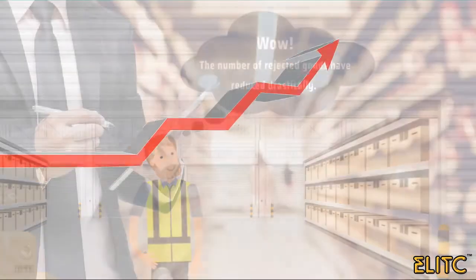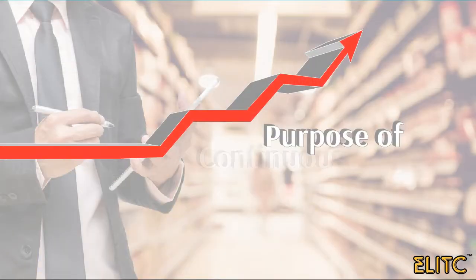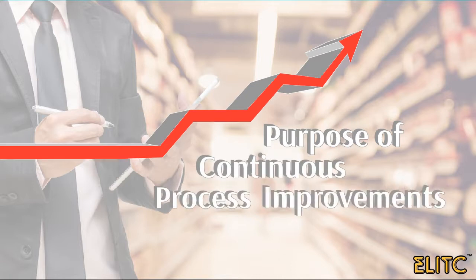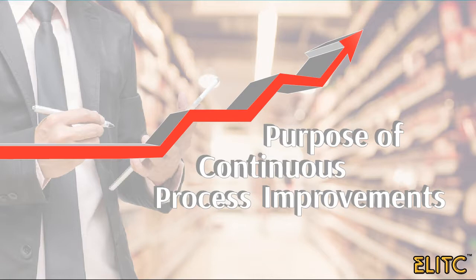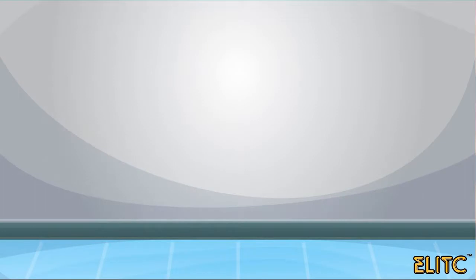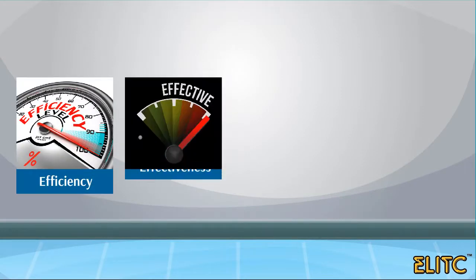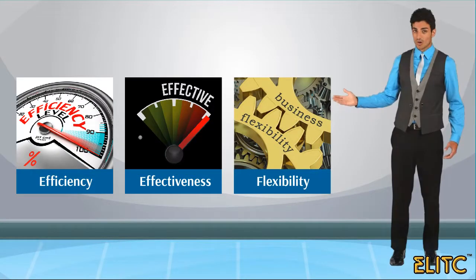The Continuous Work Improvement Process is a management process where a team needs to constantly evaluate the company's work and delivery processes to achieve maximum efficiency, effectiveness, and flexibility.